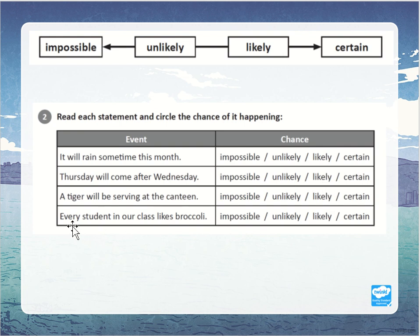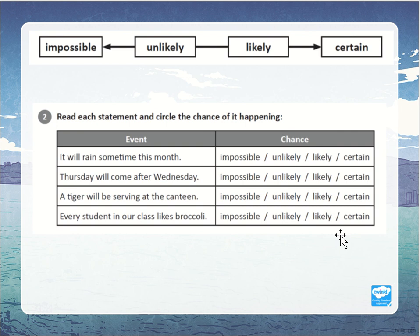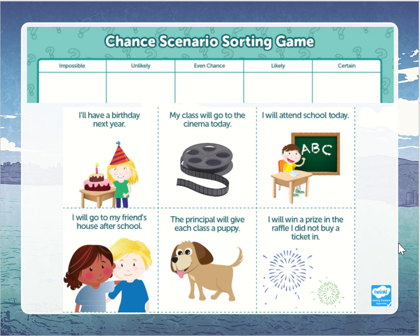What is the chance that a tiger will be serving at the canteen, giving out food orders — is that impossible, unlikely, likely, or certain? What is the chance of every student in your class liking broccoli — is it impossible, unlikely, likely, or certain? Have a think and see if you can pick one.